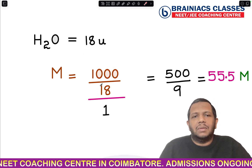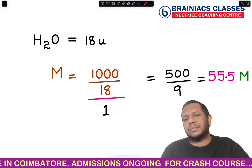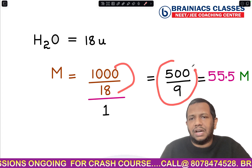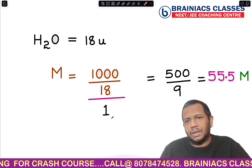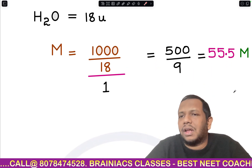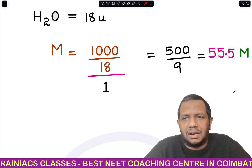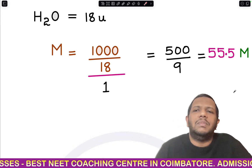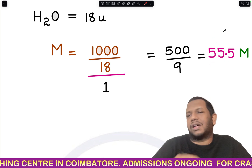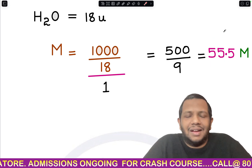Substituting into the molarity formula: molarity = (1000 g / 18 g/mol) / 1 liter = 1000/18 = 500/9 ≈ 55.5 molar. This is a standard result — the molarity of pure water is always 55.5 M regardless of the volume taken, whether 100 g, 200 g, or any amount.